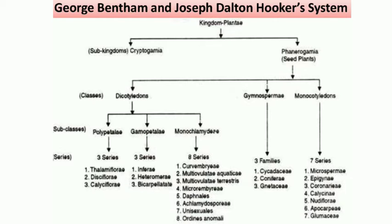Remember, they have kept Gymnosperms between Dicot and Monocot. Dicotyledons have been classified into three sub-classes: Polypetalae, Gamopetalae, and Monochlamydae. Polypetalae means flowers with free petals.